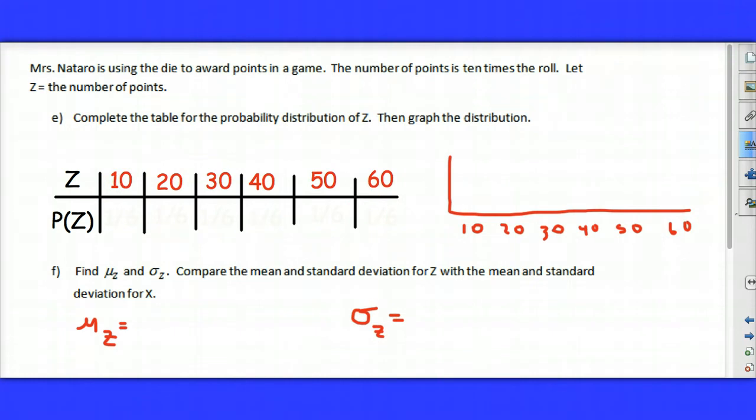10, 20, 30, 40, 50, 60. But notice once again, the probability of each of these values is 1/6. So when I draw my distribution or graph my distribution, once again, I have a uniform distribution where each value occurs with the same probability of 1/6.